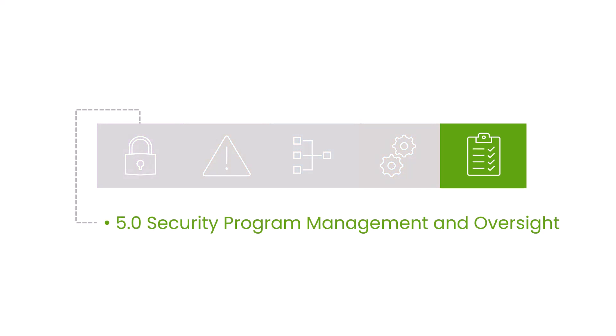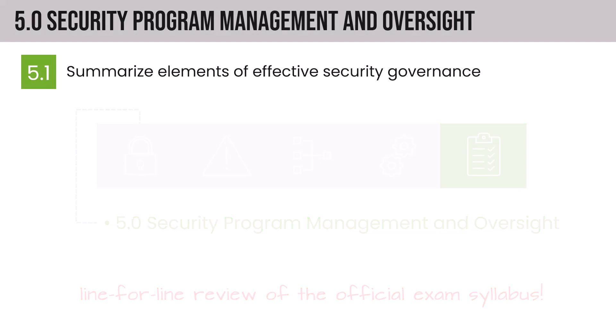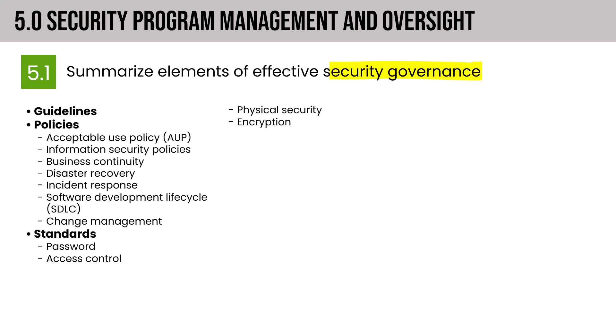Domain 5 focuses on security program management and oversight, and through these installments we'll go line by line through every item mentioned in the official exam syllabus. Our focus in 5.1 is effective security governance, and we're asked to summarize the elements of effective security governance. There is some terminology to establish right out of the gate — from guidelines to policies to standards and procedures. You'll need to know what these four are, how they're related, and how they affect one another.